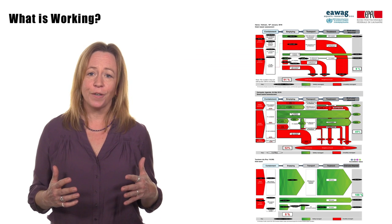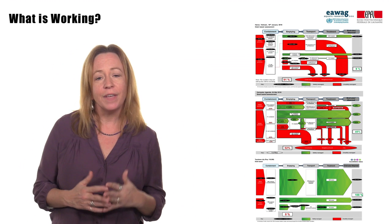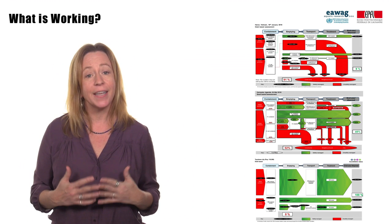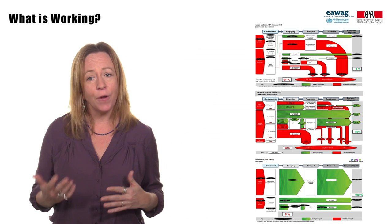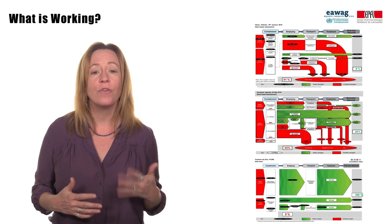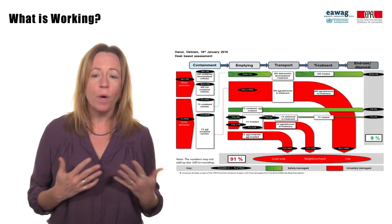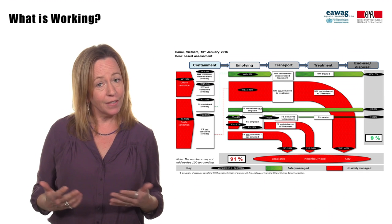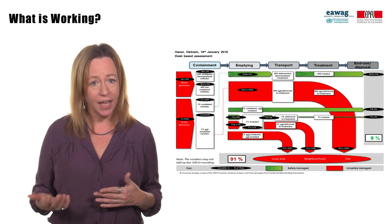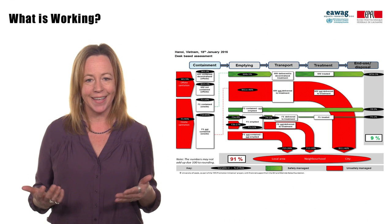You also learned about what is working and what is not working in the fecal sludge management service chain in three different cities: Hanoi, Kampala, and Toyokawa. In Hanoi, more people have access to toilets, most households have a septic tank, and there are over 40 collection and transport companies.